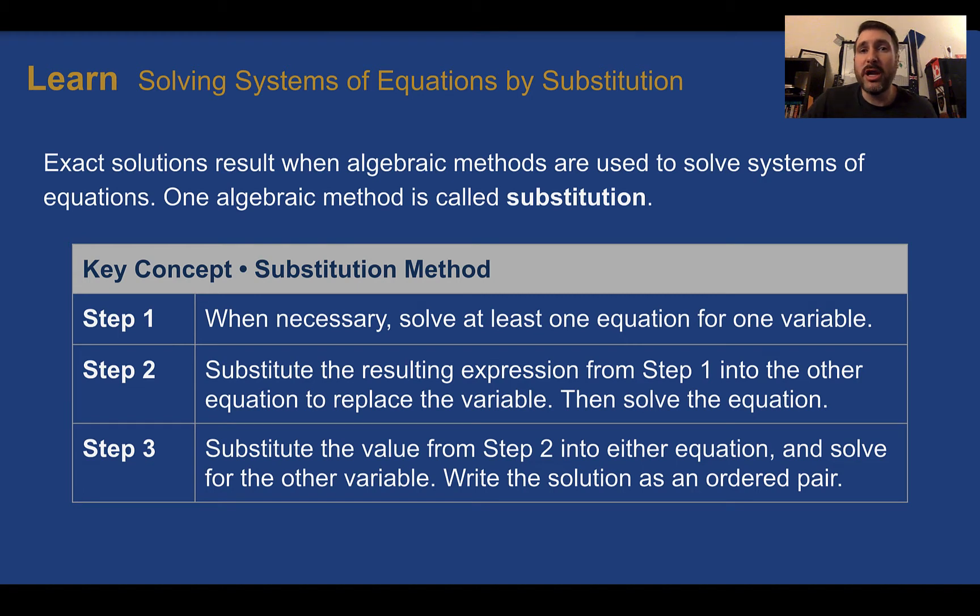Here they mean algebraic as in we are solving for a variable, whereas in our last lesson when we saw graphing, we were finding the point of intersection. Without the help of graphing technology like Desmos or a graphing calculator, graphing is actually the hardest method to do, especially when the numbers do not come out perfectly. Substitution is a method we can use to get an exact answer, even if we have a messy fraction or random decimal as one of our x or y values.